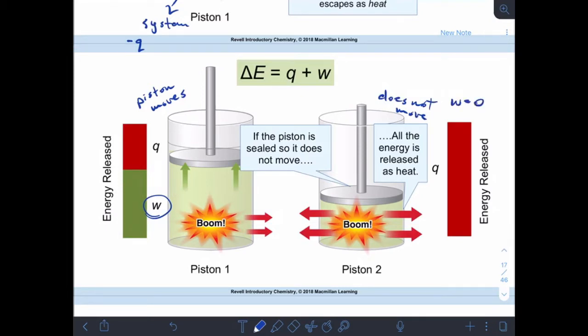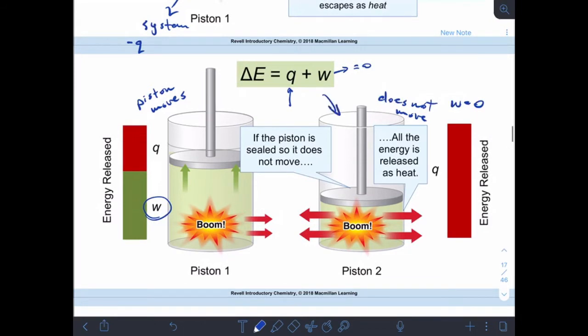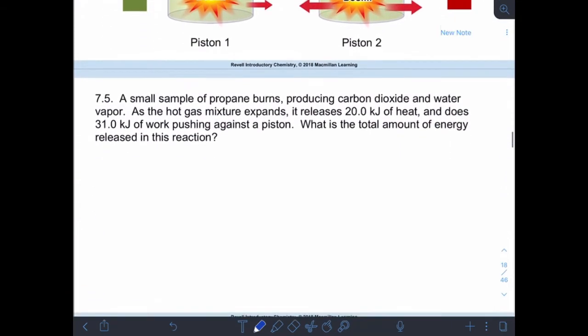Okay, so we still have this ΔE equals Q plus W, but if W equals zero, then all of the energy is Q. Okay, that's what's happening in this second piston here. Okay, so in order for there to be work, something has to move. Okay, so let's take a look at an example of how that plays out.